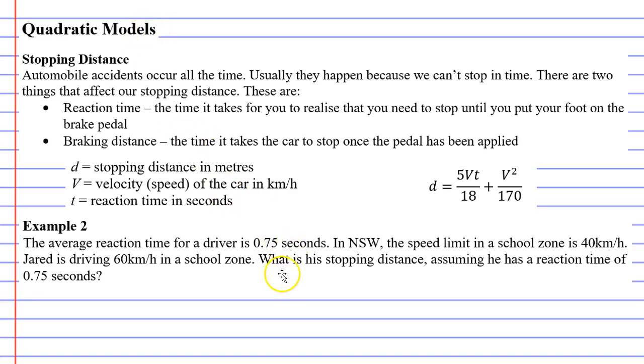We're going to calculate the stopping distance of someone traveling in a school zone. Now, stopping distance is a topic that's actually covered in the year 11 standard mathematics course, and this is the formula that we use.